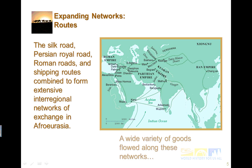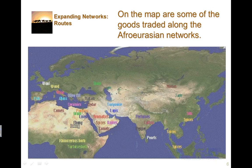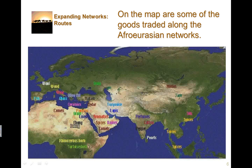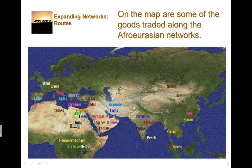A wide variety of goods flowed along these networks. On this map, you can see some of the goods that were traded in Africa, Europe, and Asia: fish, wool, wood, wine, glass, olive oil, metals, cedar, grain, camels, papyrus, linen, ebony and ivory, rhinoceros horn, tortoise shell, aromatics, spices, knives, turquoise, lapis, perfumes, cotton, pepper, pearls, silk, jade, and horses.